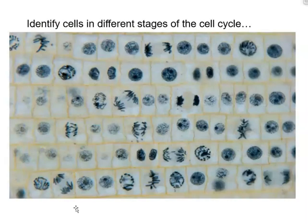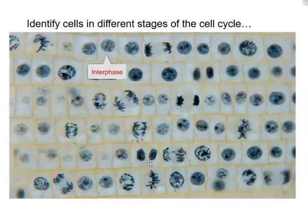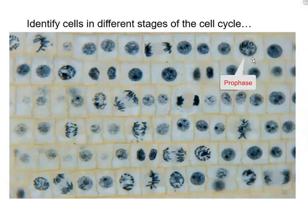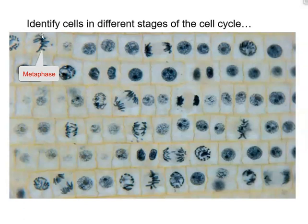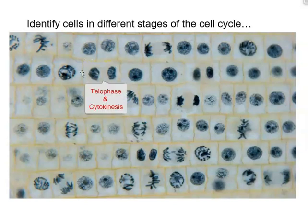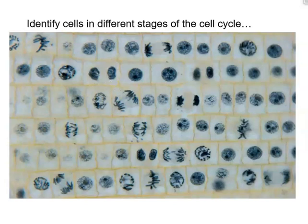This image shows different stages of the cell cycle in an onion root tip. Not every cell divides at the same time — most are in interphase. But you can identify specific stages: one cell shows chromatin beginning to condense; another has chromosomes lined up across the center of the cell; another shows separation — this would be anaphase. And this cell here shows telophase, where the cells are smaller, the nuclear envelope is reappearing, and chromosomes are starting to uncondense again, preparing to enter G1 phase. Cell cycle control will be covered in the next video.